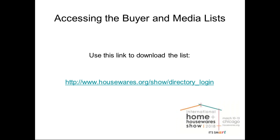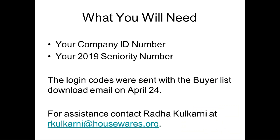Good afternoon. I'm going to take you through the steps on how you actually get to the download portion of the buyer and media list. Just so you know, housewares.org — you can search all the material we're talking about and it'll take you directly to where you need to be. A couple of things you need in order to get the list: your company ID number and your 2019 seniority number. You should have received an email yesterday from your sales manager with this information. If you didn't get it, please let us know or contact your sales manager, or Radical Carney can also provide that for you.